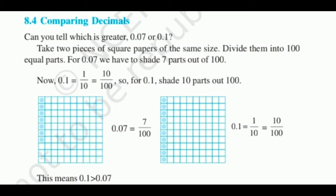In the fractional form, 1 by 10 can be written as 10 by 100. So for 0.1, shade 10 parts out of 100. You can see how 0.07 can be shaded in this image or in this picture.